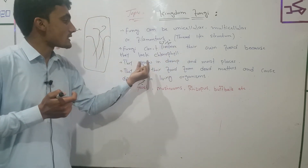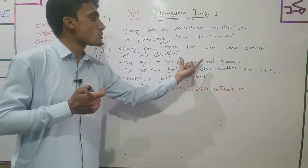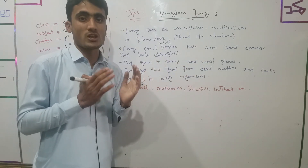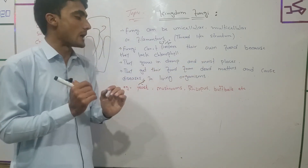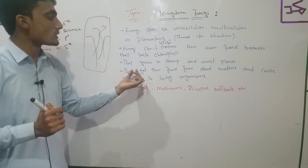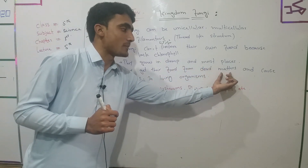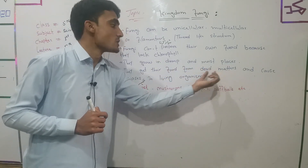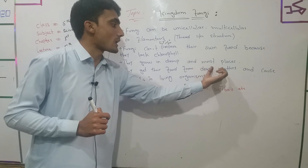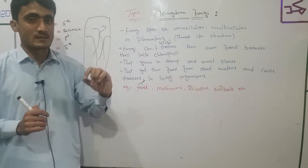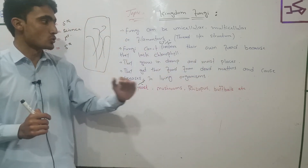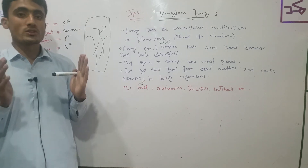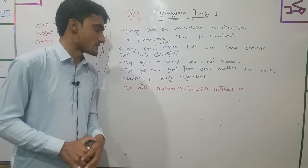Most fungi grow in moist or damp places. They get their food from dead matter, mostly from decaying organic material. And they can cause diseases in living organisms. These are the main characteristics of Kingdom Fungi.